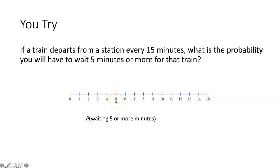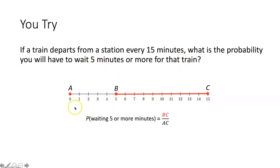We're trying to find the probability you wait 5 minutes or more, so that's from 5 minutes to 15 minutes — segment BC. To determine this probability, we use the length probability ratio: take the measure of segment BC over the measure of segment AC. The measure of segment BC is from 5 to 15 minutes, a length of 10. The measure of segment AC is from 0 to 15, so that is 15 in our denominator.